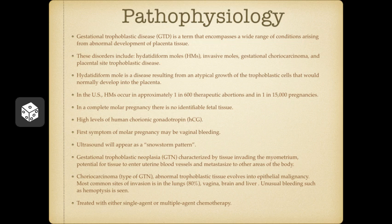Unusual bleeding occurs with gestational choriocarcinoma, such as hemoptysis. In the case study patient, she came in with a grand mal seizure and then started coughing up blood. The trophoblastic tumors and choriocarcinoma develop a vascular system containing fragile blood vessels, which is the source of this hemorrhage. Choriocarcinoma is usually treated with either single-agent or multiple-agent chemotherapies, with follow-up HCG levels monitored to confirm the levels are coming down with treatment.